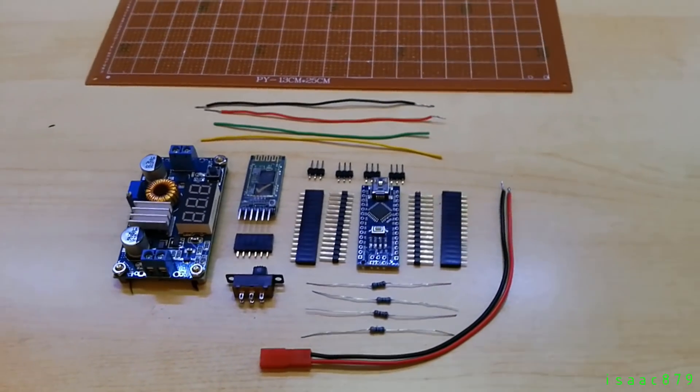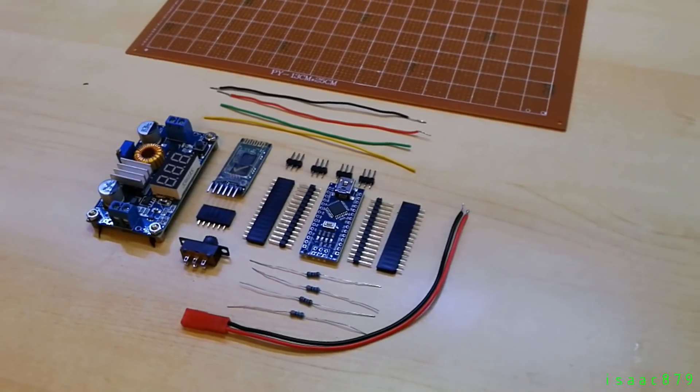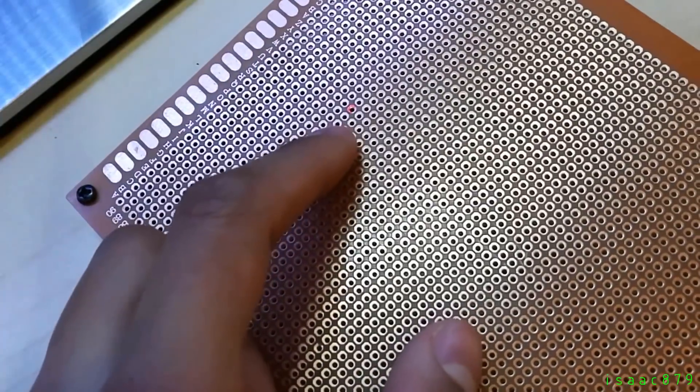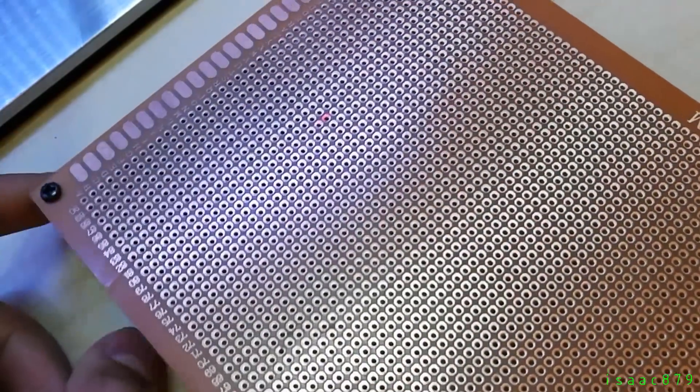This should be all the components I need for the circuit. I have screwed the buck converter in the corner and marked where the other hole needs to go for the screw. So I'm just going to drill that out with my Dremel.